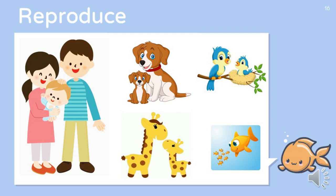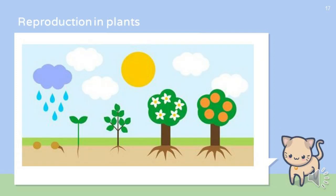Living things reproduce. All living things have their babies, like human beings and animals. Plants also reproduce. The tiny seed of a plant is just like its baby. When this seed is sown in the soil, tiny roots and leaves come out of this seed to become a plant.